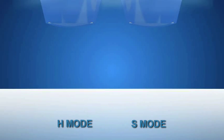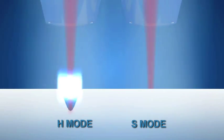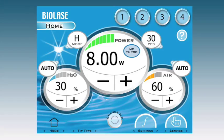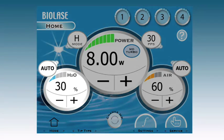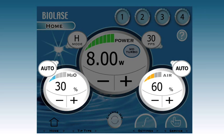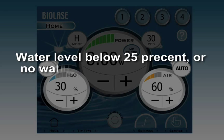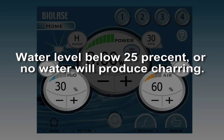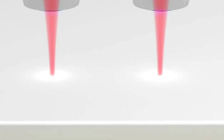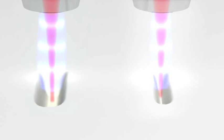H mode is used for all hard tissue cutting. S mode will not cut hard tissue. Hard tissue requires significant amounts of water spray in comparison to the soft tissue procedures. 30% water and 60% air is a good starting point for air water spray settings. Water level below 25% or no water will produce charring.